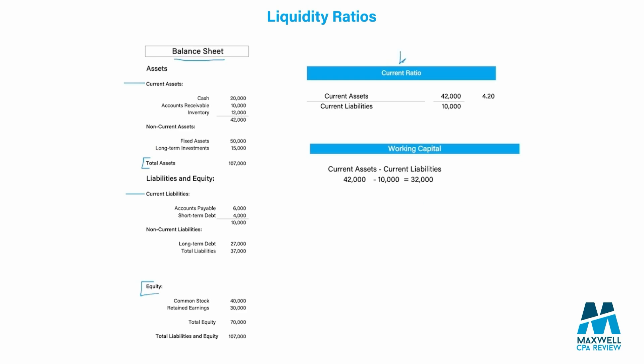First, we have the current ratio, which is your current assets over your current liabilities. If we think of the definition of current, it is the items that are going to be turned into cash or paid off over 12 months. We see here we have accounts payable and short-term debt that total up to $10,000, and our current assets — cash, AR, and inventory — are $42,000. Therefore, our current ratio is 4.2, meaning we are capable of paying our current liabilities 4.2 times.